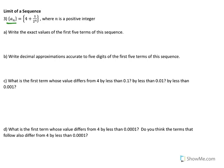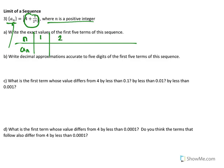This is the notation we use to represent a sequence. The subscript n represents the input, and this is the rule for the sequence. Sometimes we just write the terms of the sequence to represent it, but of course it is a function. We could also write n and f(n), but here we use the notation a-sub-n to represent the terms. Since n is a positive integer, I start with n equal to 1 and substitute values into the rule to get the terms.